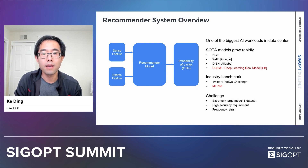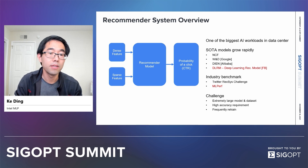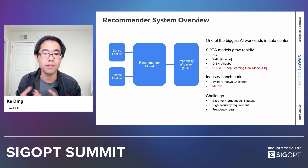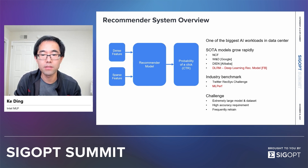The other type of input is categorical sparse features. Examples like gender, like product ID, like location. Sparse features usually are very large due to their nature.